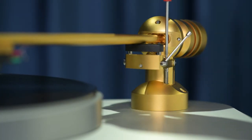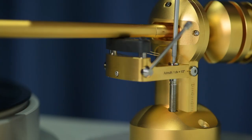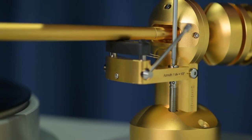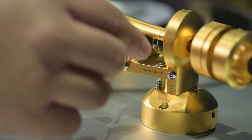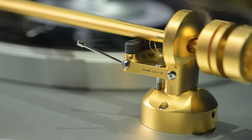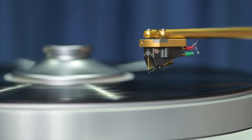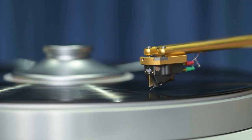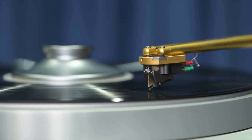The cartridge is pre-installed on the headshell and all the settings like VTA and azimuth will be preset in the factory. All you need to do is to slide the headshell into the tonearm and adjust the counterweight to the correct tracking force. You can get the perfect result right out of the box without hiring an expert for installation.